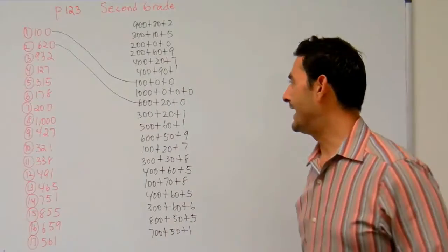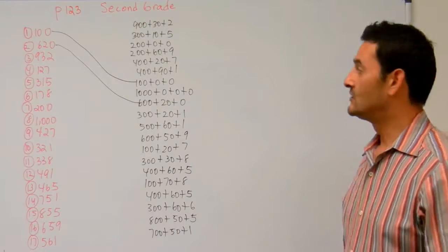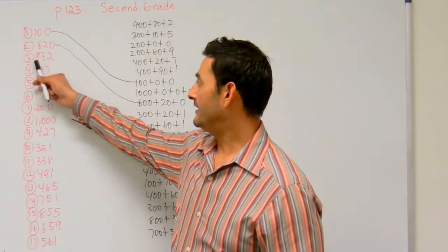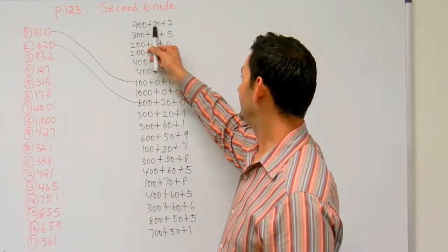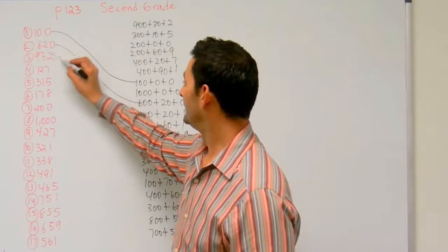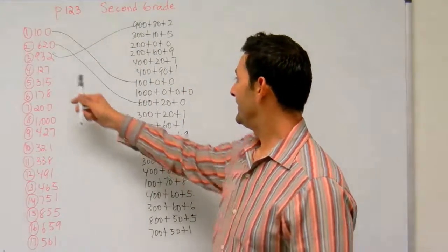Number 3, I've got 932. So I'm looking for 900 plus 30 plus 2. 900 plus 30 plus 2, that's it right there.